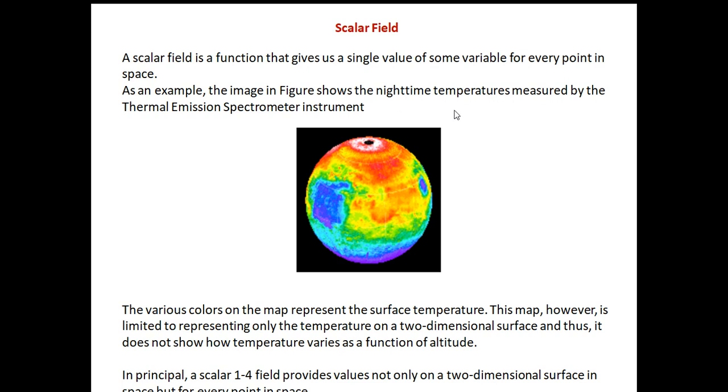The image in the figure shows the nighttime temperatures measured by some instrument called thermal emission spectrometer instrument. Various colors on the map represent the surface temperature. This map however, is limited to representing only the temperature on a two-dimensional surface and thus it does not show how temperature varies as a function of altitude. In principle, a scalar field provides values not only on a two-dimensional surface in space but every point in space.